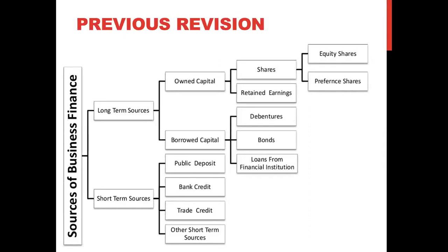Now class, we saw the topic of sources — how a company can acquire finance. In this chapter, lesson number three, we will be studying about how the company issues shares, how it offers shares to the public, what are the different ways of offering shares not only to the public but to other creditors, to existing shareholders, and to its own employees within the company as well.